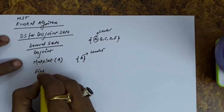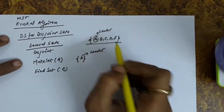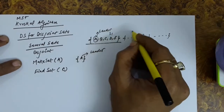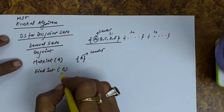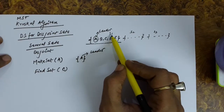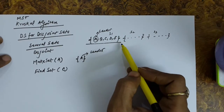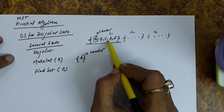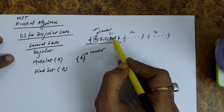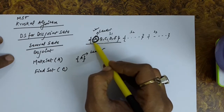Now consider the find set operation — for example, find set C. Suppose there are sets S1, S2, and S3, where S1 contains elements A, B, C, D, E with leader A. The find set C operation finds which of the available sets contains C. Since C is in S1, the find set operation returns the leader of that set, which is A.